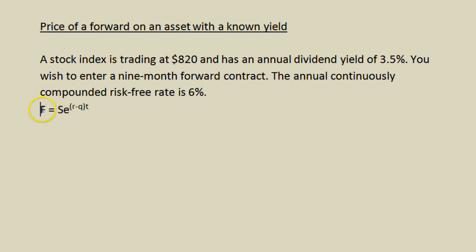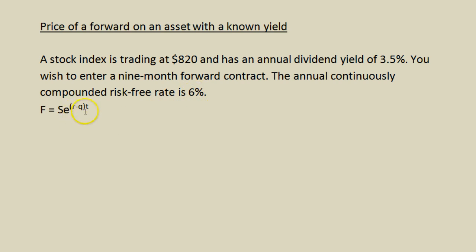The forward price is going to be equal to the current spot price — $820 — times E raised to R, which means the interest rate, 6%, minus Q. I don't know where the letter Q comes from, but it happens to stand for the known yield.